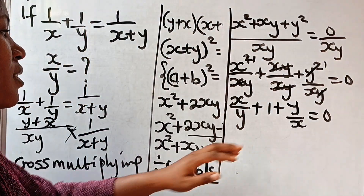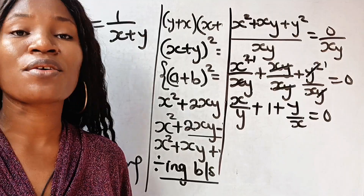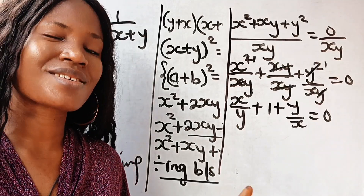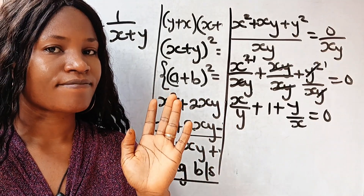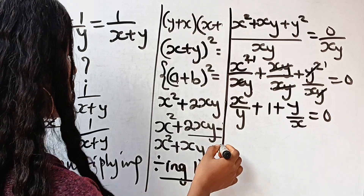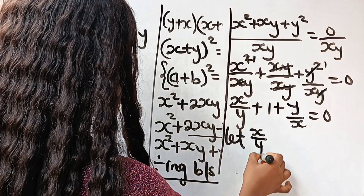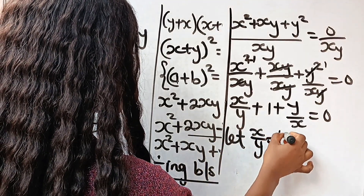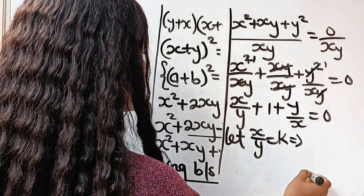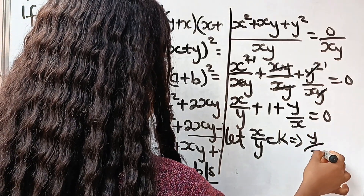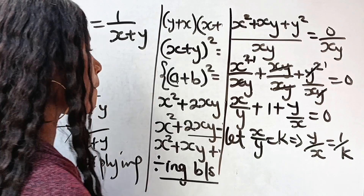Now let us continue. At this point, we have x over y and we have y over x. We can simplify that equation. So you can say, let x over y be equal to k. So that implies that y over x is equal to 1 over k.